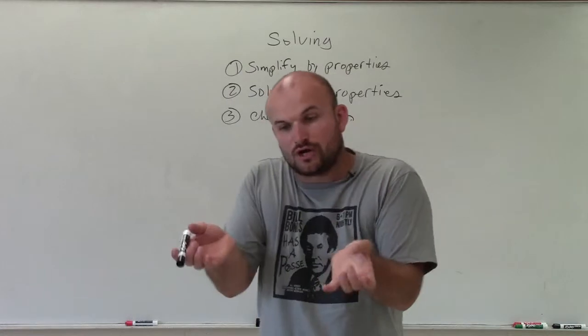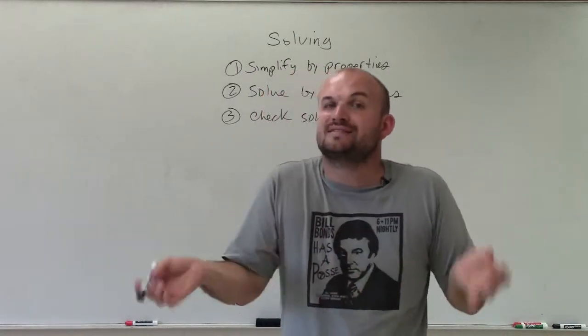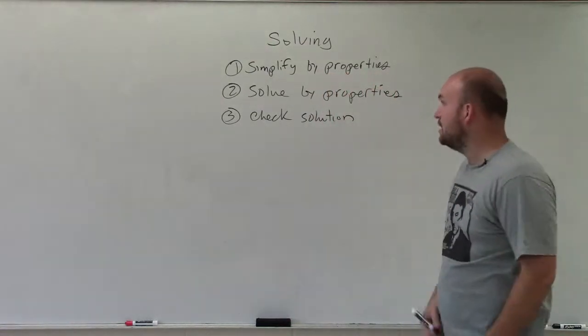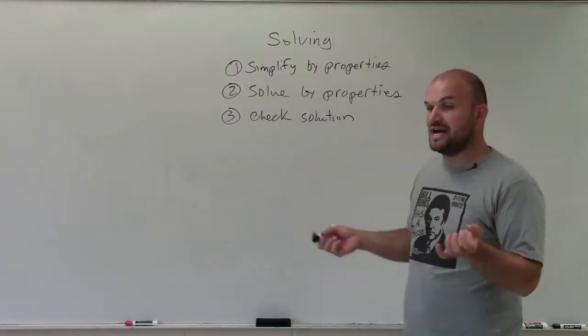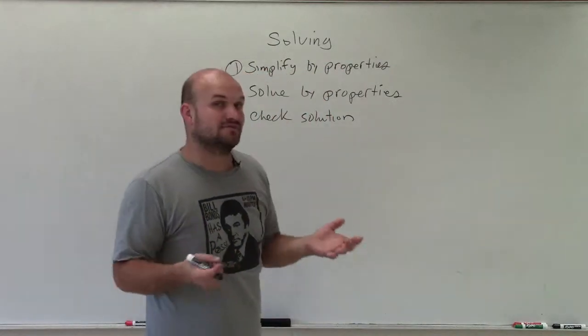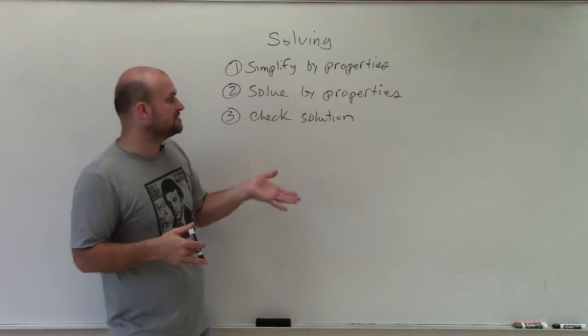So we like to take logarithms, rewrite it as exponential, because then you don't have a logarithm, and it's a little bit easier for you to understand how to solve it. The other way is, if you have a log on both sides, you can use the one-to-one property. As long as the base of the logarithms are the same, you can apply the one-to-one property to solve.